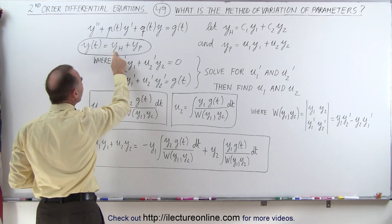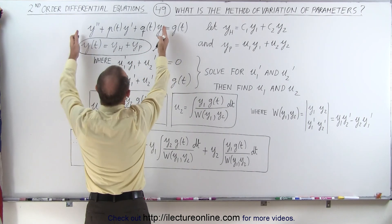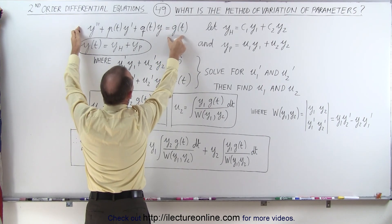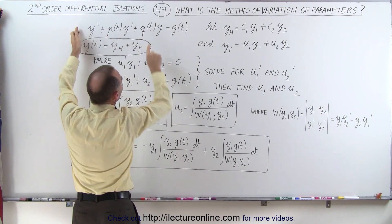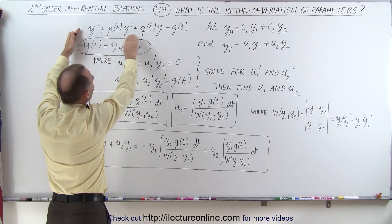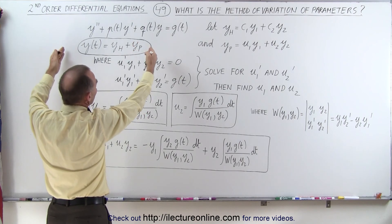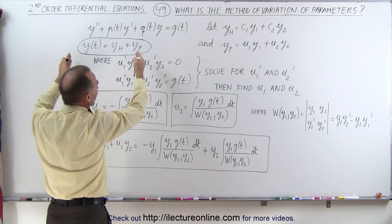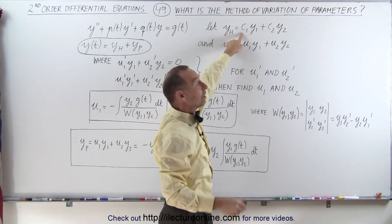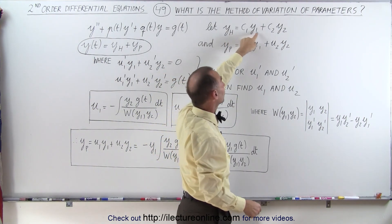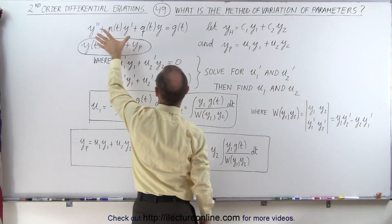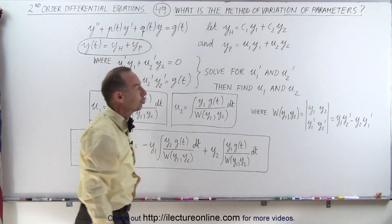To find the homogeneous part, you set the right-hand side equal to zero and solve that part of the differential equation. When we have constant coefficients, we use the characteristic equation, solve for the roots, and come up with the standard solution — a constant times a function plus a constant times a function — where y1 and y2 are solutions to the homogeneous equation.